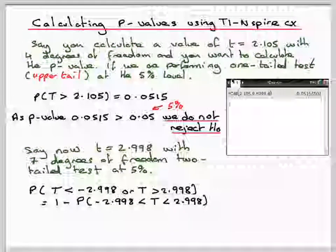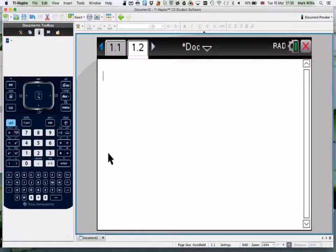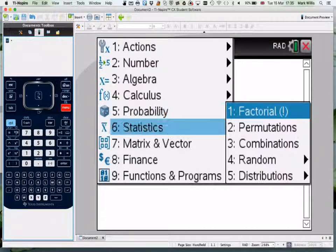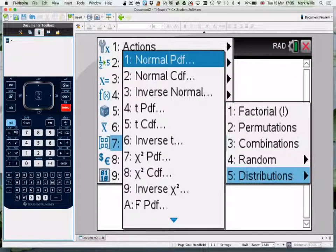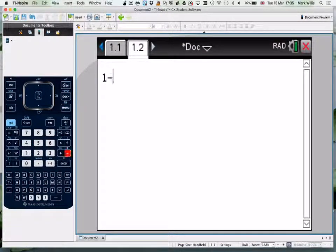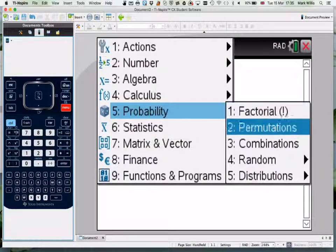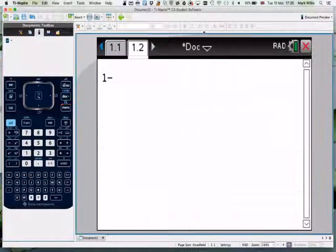So again, go to the calculator. Do Menu, number 5 Probability, Distributions, TCDF. Wait—1 minus, don't forget that first. You can always go back and add it if you haven't. So: Probability, Distributions, TCDF.